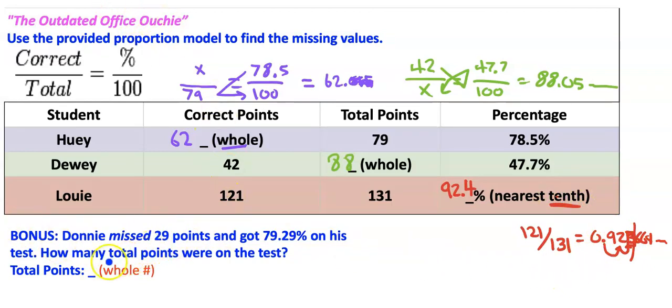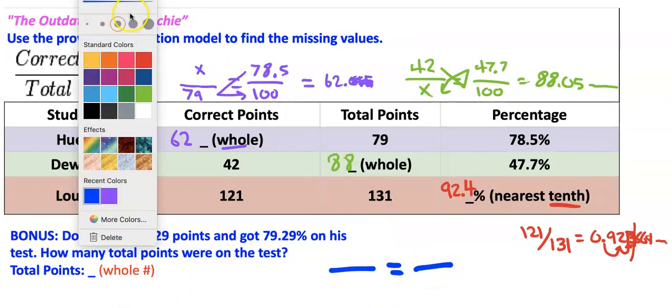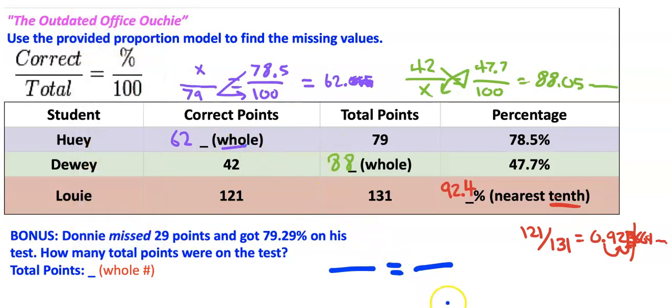Ooh, this is a good one here. Bonus. Donnie missed 29 points and got a 79.29 on his test. How many total points were on the test? Ooh, this is a good one. So here's how I would attack this one, students. So I want to put the 29 right here. And then I want to put the, I don't know for the total. So instead of the percent or the number correct, I'm now going to put the number wrong. So I can't figure out how many I got correct because I don't know the total because either you get them right or you get them wrong. So starting with the wrong ones. I'm going to put that right there. And then I'm going to try to find the total based off the wrong.